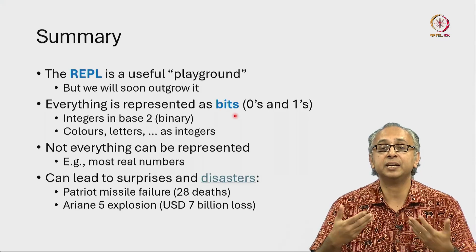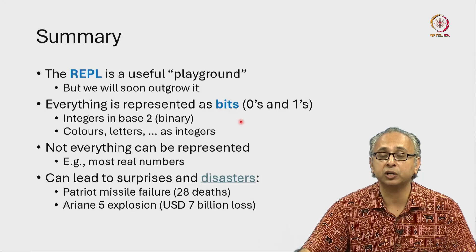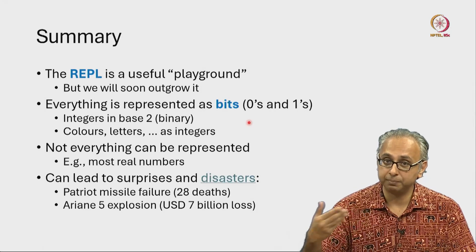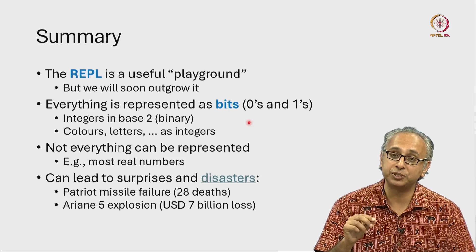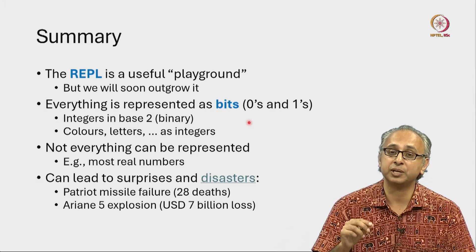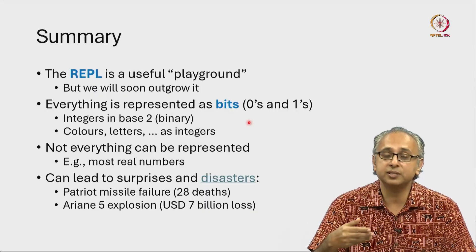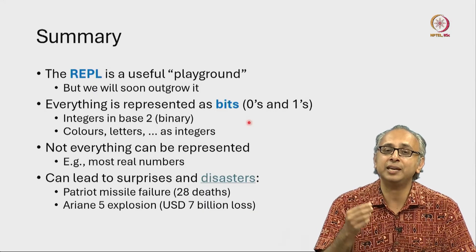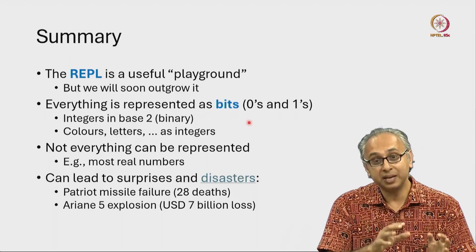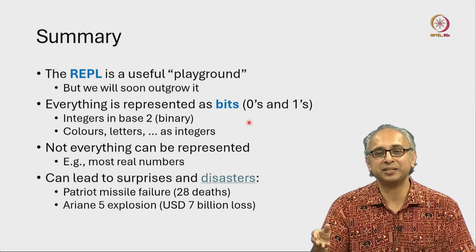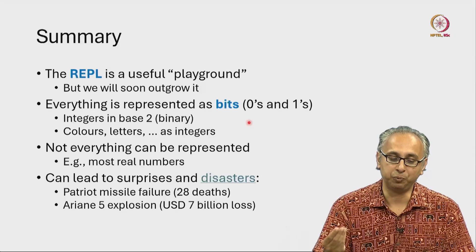The program that is running that — for example, makes this red dot move when I am moving the mouse — that program itself is represented using zeros and ones. The colours, as we have seen, strings, numbers, everything internally is represented as numbers which in turn can be represented in base 2 or binary as zeros and ones.